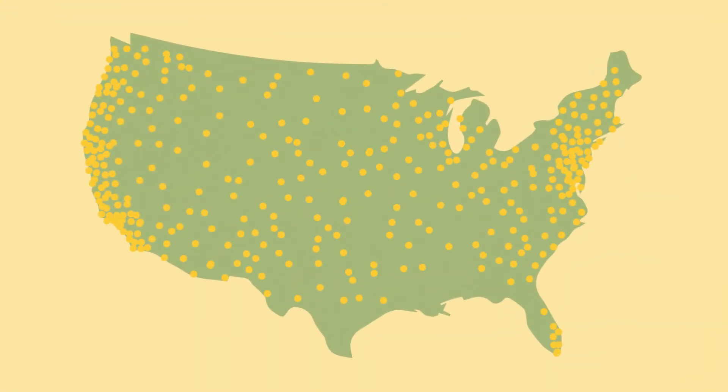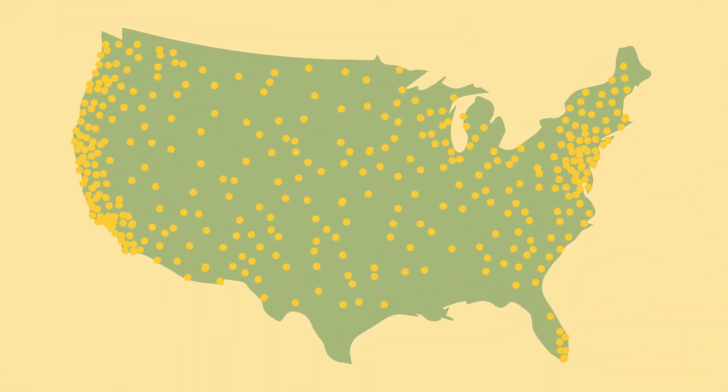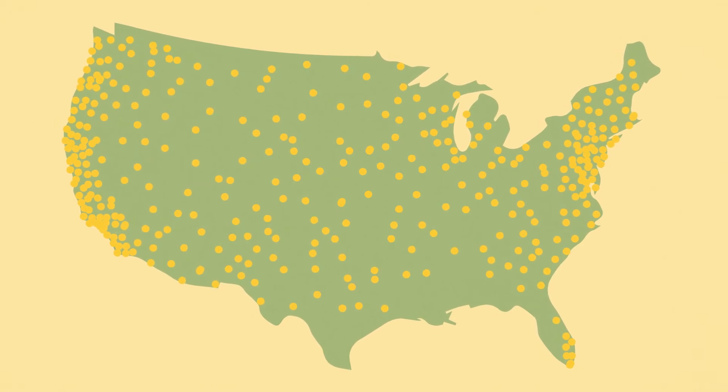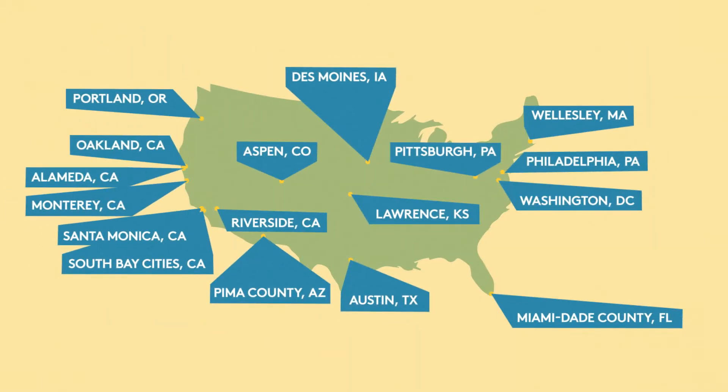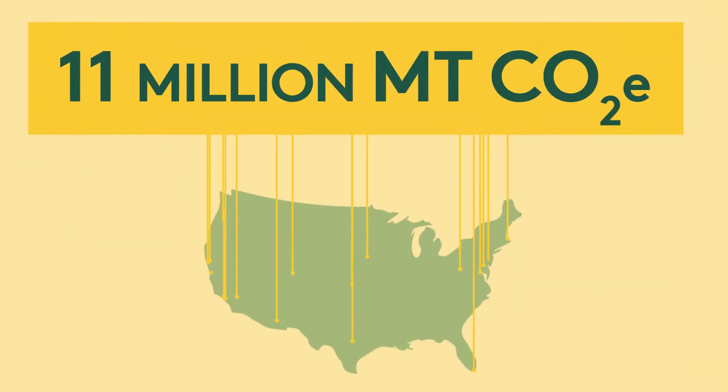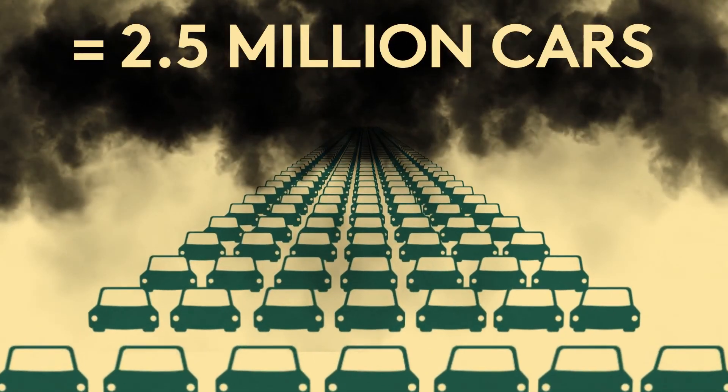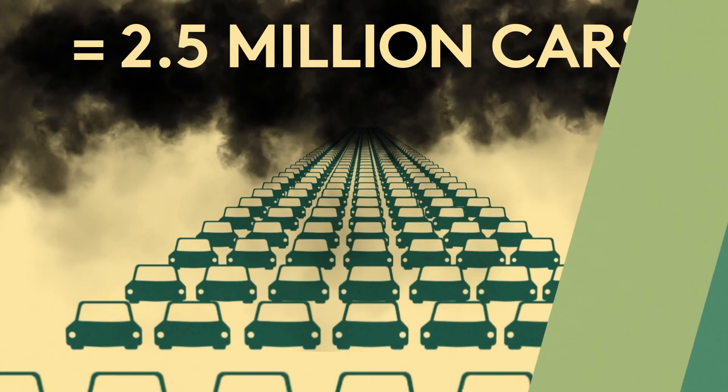Currently, over 300 U.S. communities are using ClearPath to track their energy and emissions data. A select group of just 17 communities have demonstrated estimated reductions of over 11 million tons of carbon pollution, equal to taking 2.5 million cars off the road in the U.S.